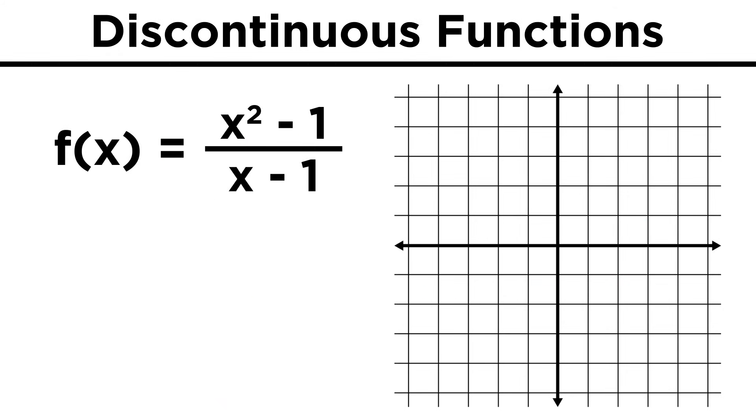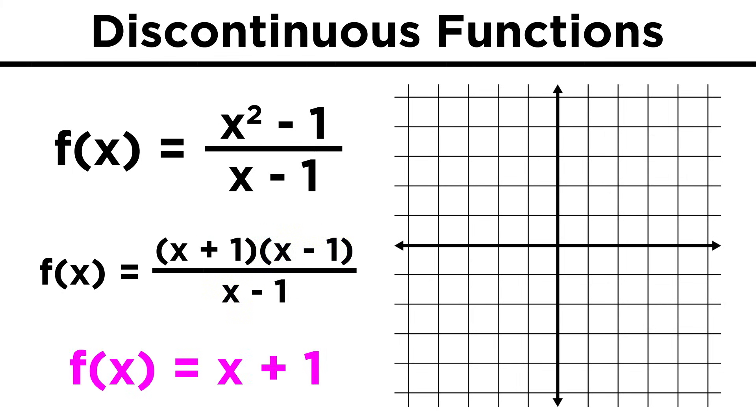Take x squared minus one over x minus one. If we are clever, we can see that the numerator will factor into binomials, and that these two terms cancel, leaving us with x plus one. Therefore the graph will resemble the line x plus one. However, if we return to the original function, there is one tiny difference.